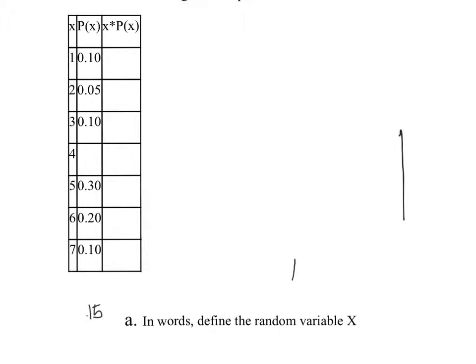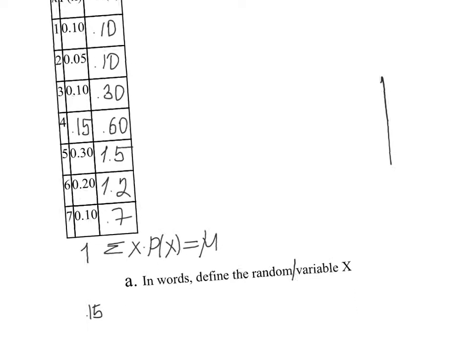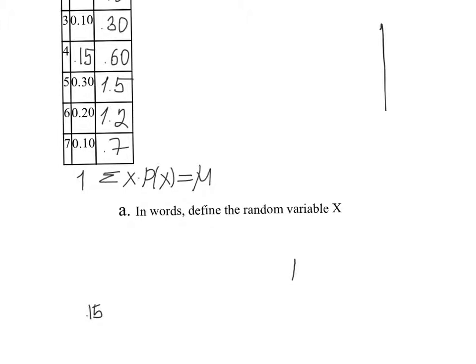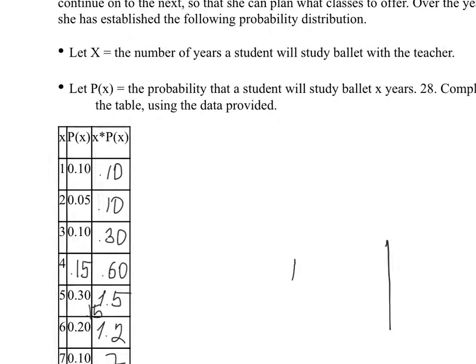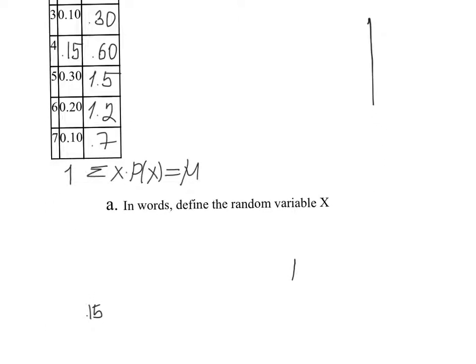Now let's look at the questions. In words, define the random variable X. I actually have X here: the number of years the student will study ballet with the teacher. So it's exactly the number of years students study ballet with the teacher.